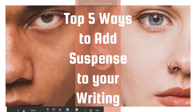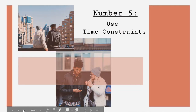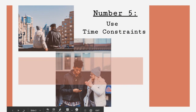Top 5 ways to add suspense to your writing. Number 5: use time constraints. Time constraints add a little bit of pressure to the character to make sure that they get to the thing that they want in time.